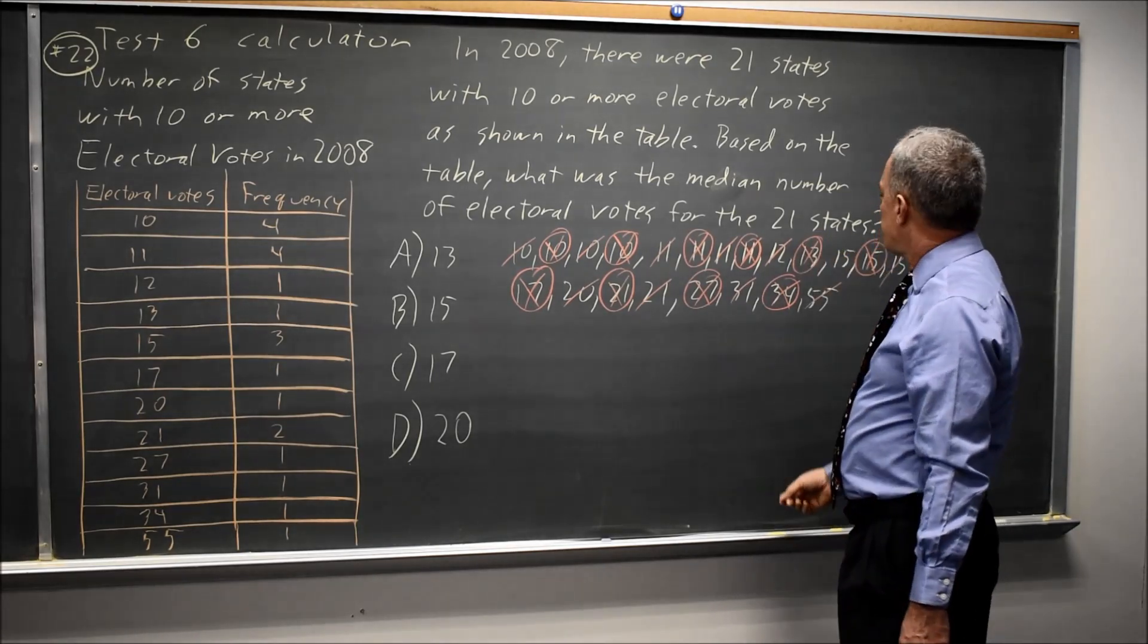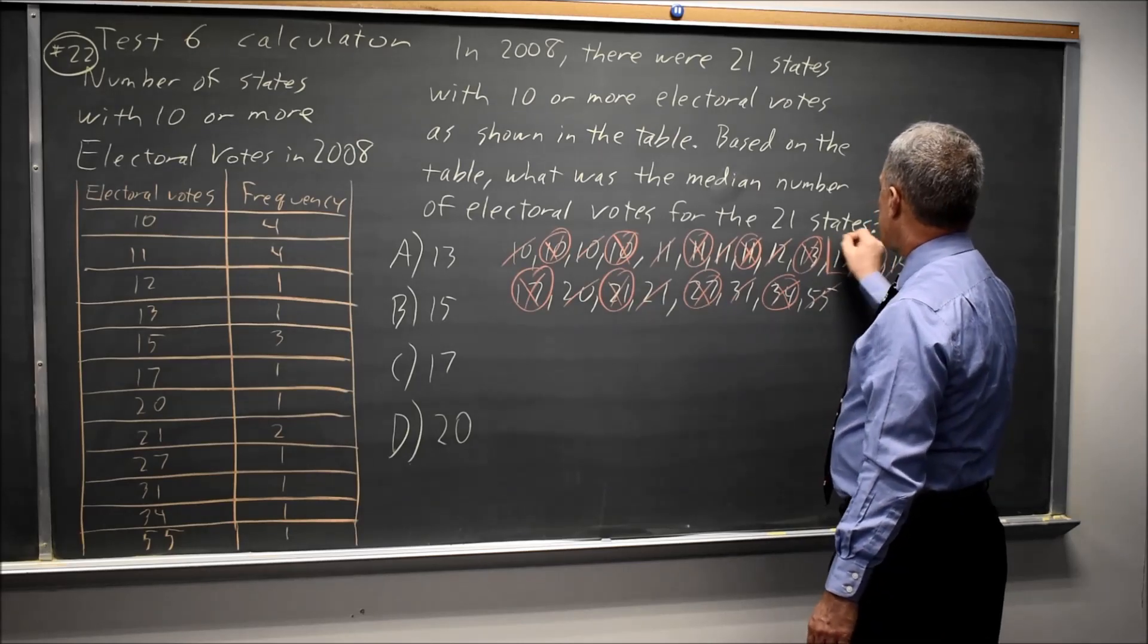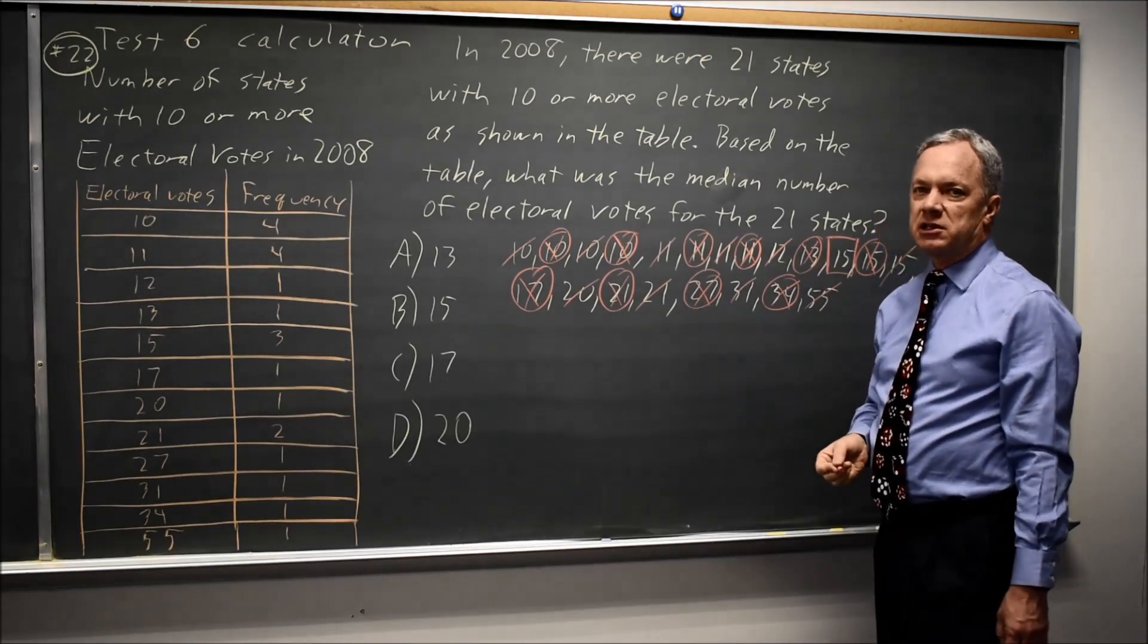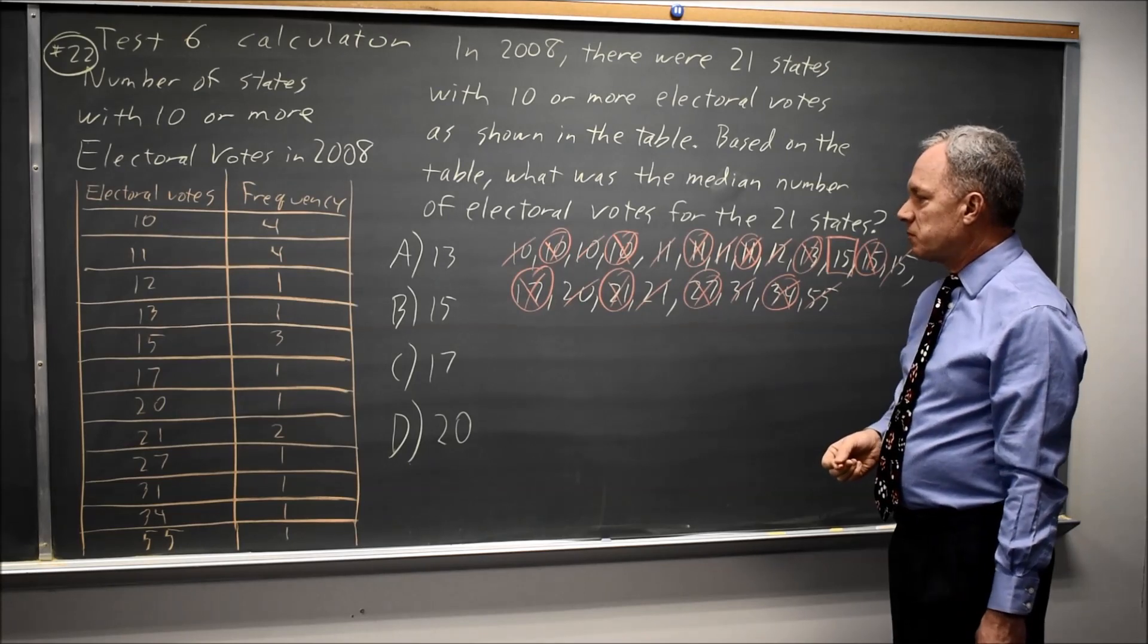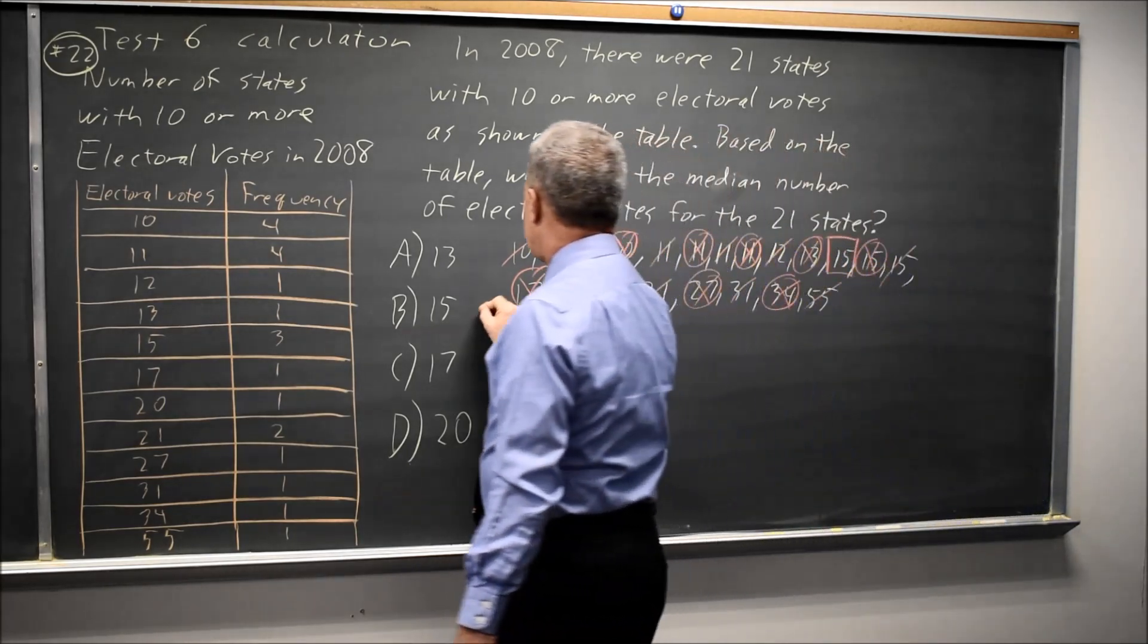They're asking for the median, which is the middle number in the list when the numbers are listed from smallest to largest, so the median would be 15, which is choice B.